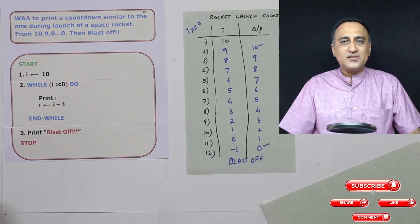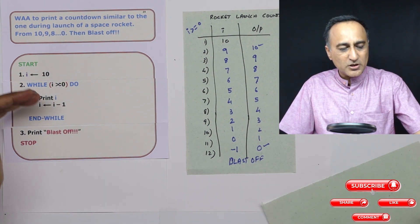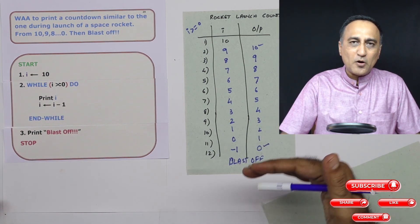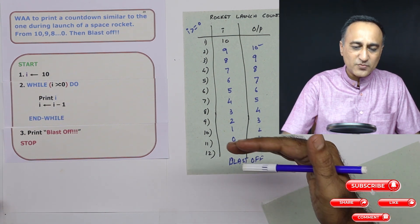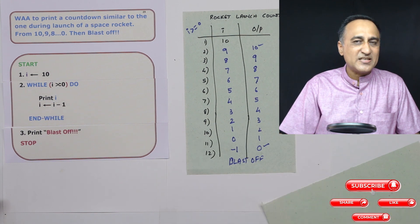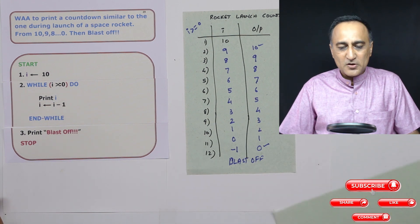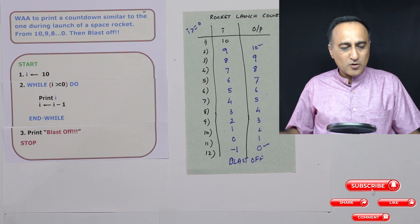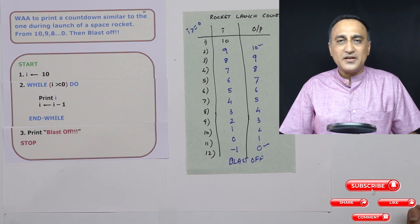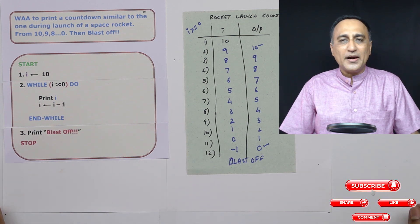So I hope this gives you an idea of how you can use a looping statement to keep doing counting up or counting down. In this case, we did counting down. In the previous examples, we counted up. So I hope this makes you a lot more confident on usage of repetition or while, do, and while loop.